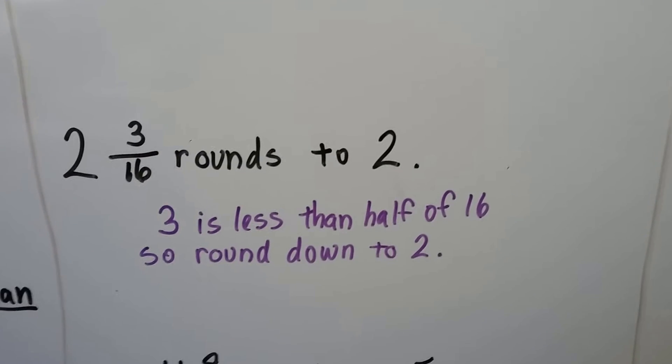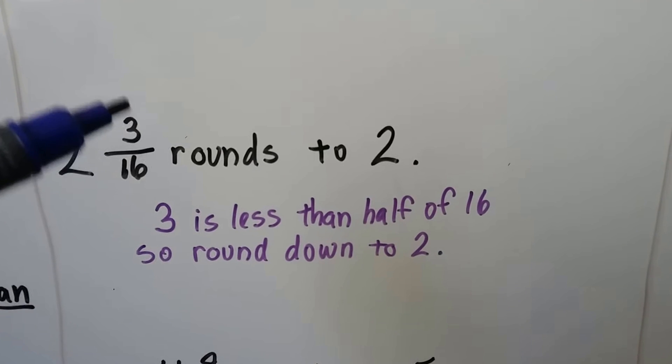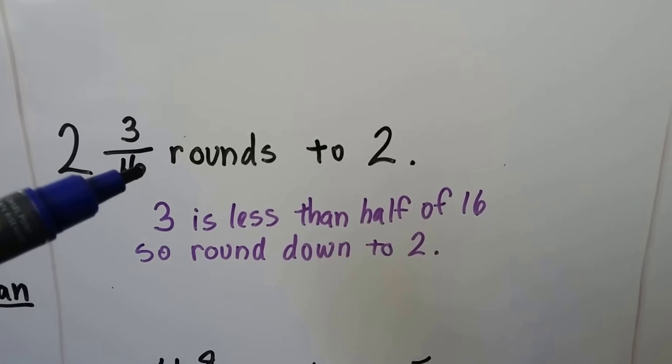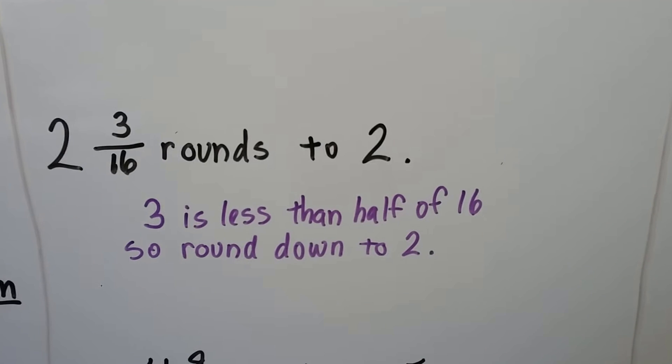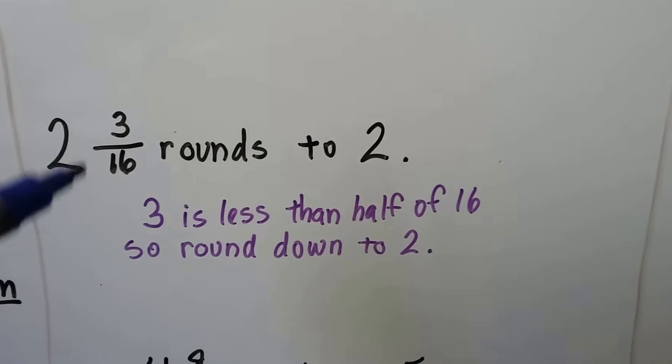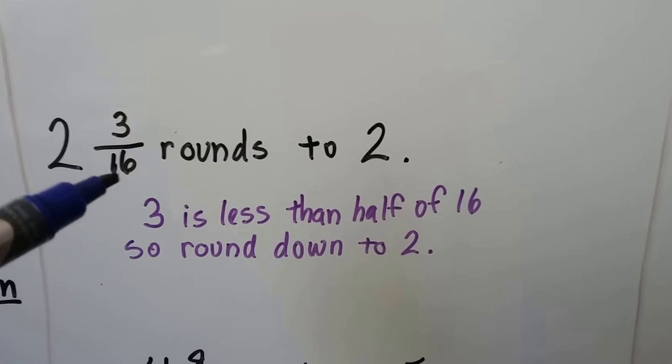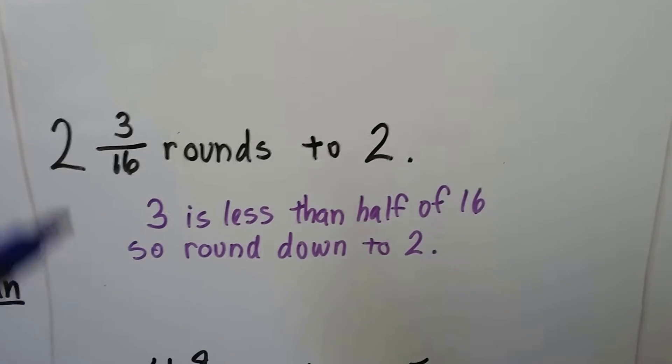Here we have 2 and 3 sixteenths. The 3 is way less than half of 16, so we're going to round this to 2. It would have to be 8 sixteenths to be half. So 3 sixteenths is very small, closer to 2.